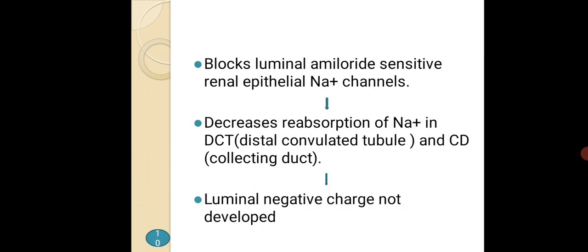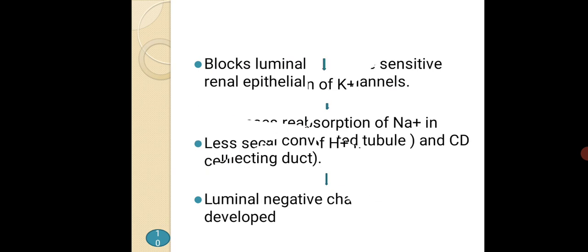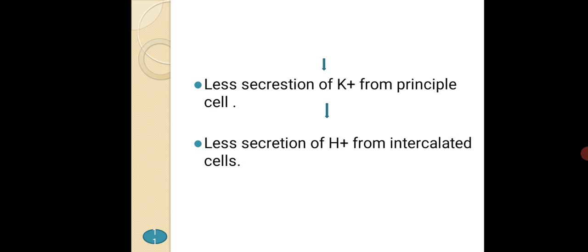It blocks the luminal amiloride-sensitive renal epithelial sodium channel. It decreases reabsorption of sodium in the DCT (distal convoluted tubule) and CD (collecting duct), and does not develop a luminal negative charge. Therefore, there is less secretion of potassium from the principal cell and less secretion of hydrogen from the intercalated cell.